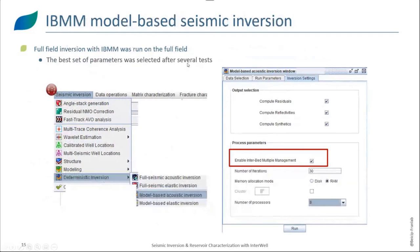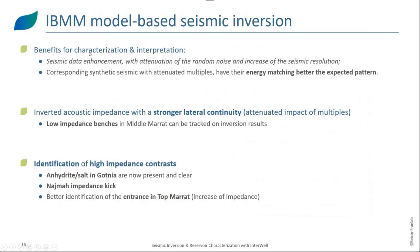We then constructed an initial model and performed a full-field inversion with the IBMM option. We had to do several tests to select the best set of parameters for the best match with the synthetic data and well data. The option in the seismic inversion is also straightforward — you just need to select 'Enable Interval Multiple Management' when selecting the parameters for your model-based inversion. Regarding the results, we have seen several benefits: seismic data enhancement, attenuation of random noise, increase of seismic resolution, and a corresponding synthetic seismic with attenuated multiples, with energy better matching the expected pattern.